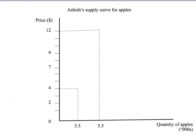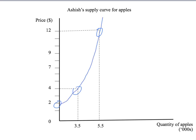Angel isn't the only apple seller. Let's suppose there's another seller called Ashish, who has a different supply curve. Just like Angel, if apples are less than $2 per kilogram, Ashish would close his stall. At $4 per kilogram he would like to sell 3,500 kilograms per day, and at $12 per kilogram he would like to sell 5,500 kilograms per day. We can join up those points to draw the blue curve, which is Ashish's supply curve for apples.